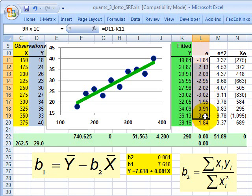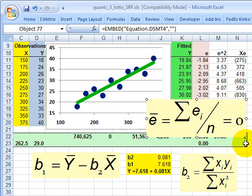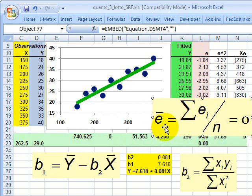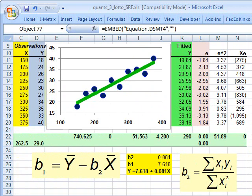And so here's another thing about this regression. The expected value of the residuals, or the average, you see this formula right here, is going to equal zero. The expected value of the residuals, so that's the sum of the residuals divided by the number of points, equals zero. And I can confirm that by looking right down here. This is the average of my residuals, and it does, in fact, equal zero.